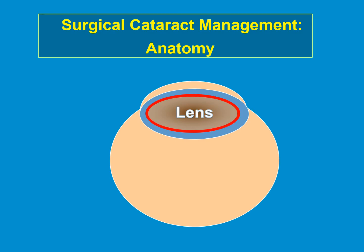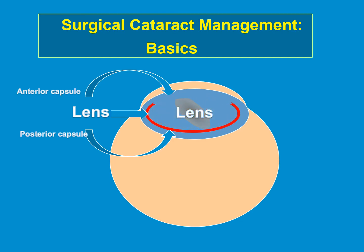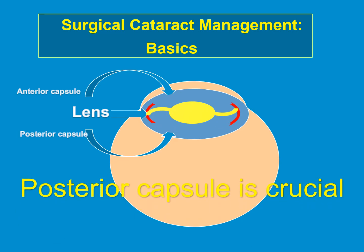A very important topic is the surgical anatomy. You have to remember: this is the capsule. The front part is called the anterior capsule and the back part is called the posterior capsule, though it is one continuous capsule, and inside the capsule is the nucleus. We take off the anterior capsule, remove the cataract, and put the implant in. The implant rests on the posterior capsule. If you don't have the posterior capsule, the lens is going to drop down. So the posterior capsule is very crucial for the implant.